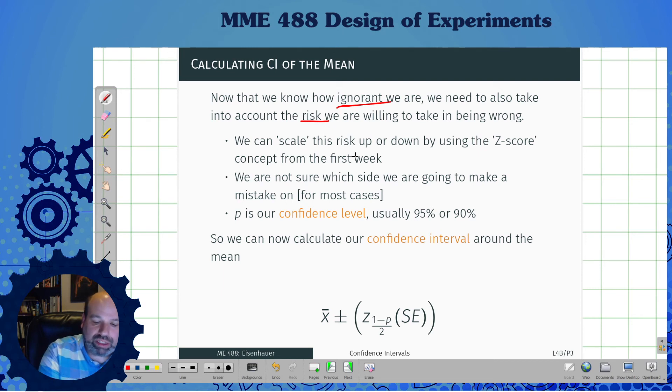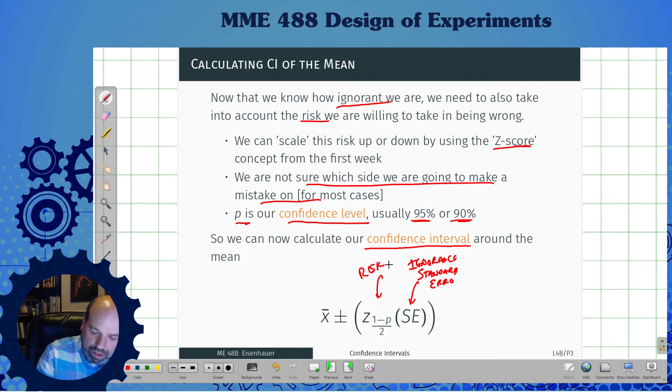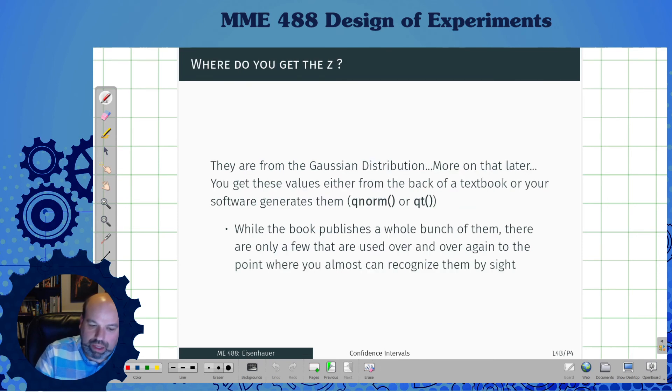Now we need to know how ignorant we are. We also need to know how much risk we're going to take. We scale up this risk by using a z-score concept from the first week of class. We're not sure which side we're going to make a mistake on because we don't really know. So we have this concept of P, which is our confidence level. How much risk do we want to take? Usually for engineering, we're going to use 95 or 90. Now we can actually calculate our confidence intervals. Here's that standard error. This is ignorance. And this is risk. We're going to get this risk factor from our normal distribution curves, from the Gaussian distribution.